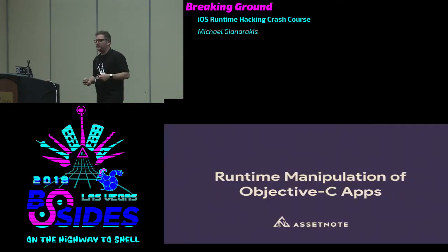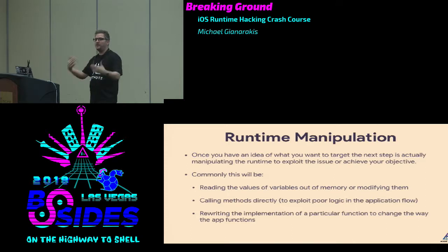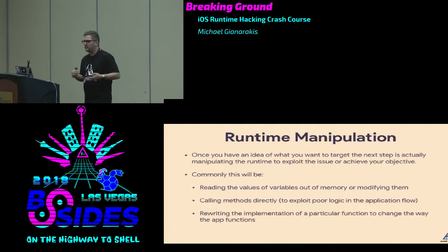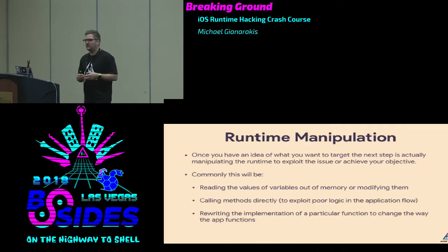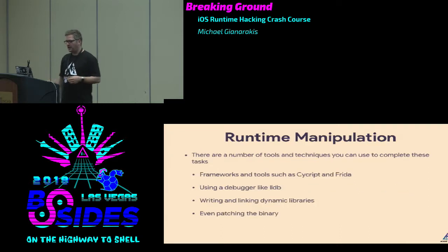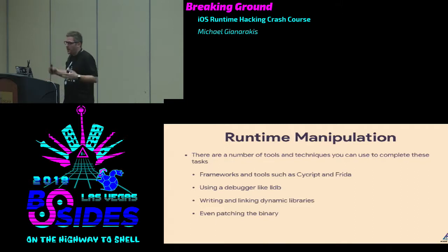So let's move on to actually manipulating the runtime of the app. Once you have an idea of what you want to target, the next step is to manipulate the runtime and exploit the issue. It commonly falls into a few buckets: reading values of variables out of memory or modifying them; calling methods directly to exploit poor logic in application flow; and rewriting the implementation of a particular function to change how the app functions. Tools you can use include Script and Frida, a debugger like LLDB, writing your own dynamic libraries and linking them in, or even just patching the binary.